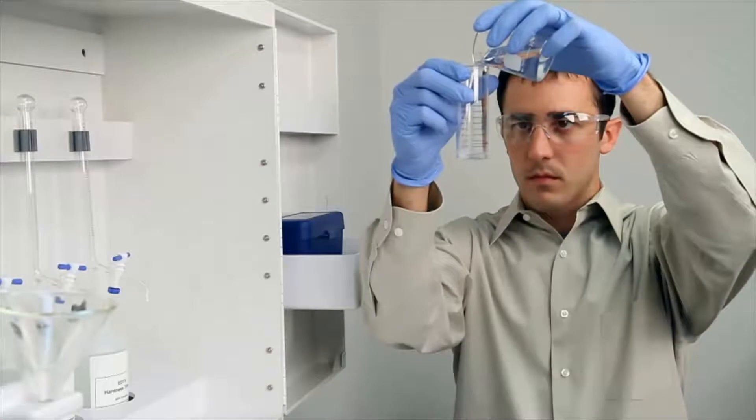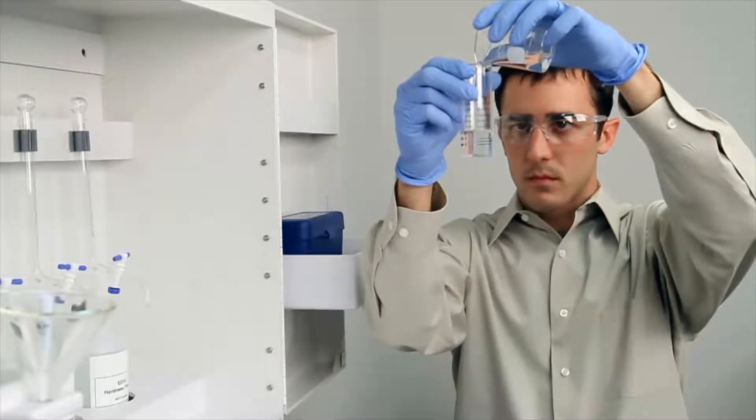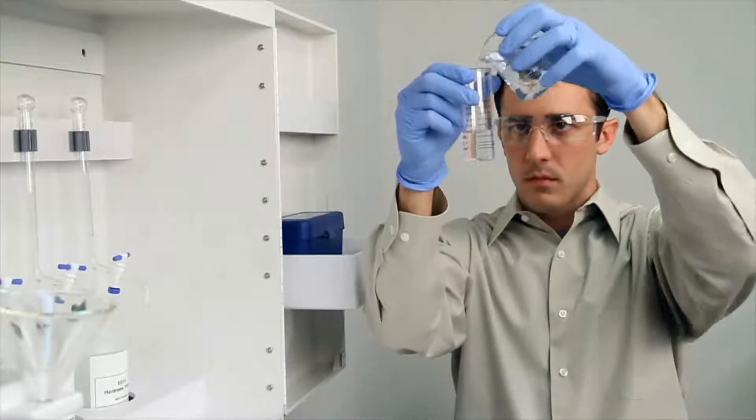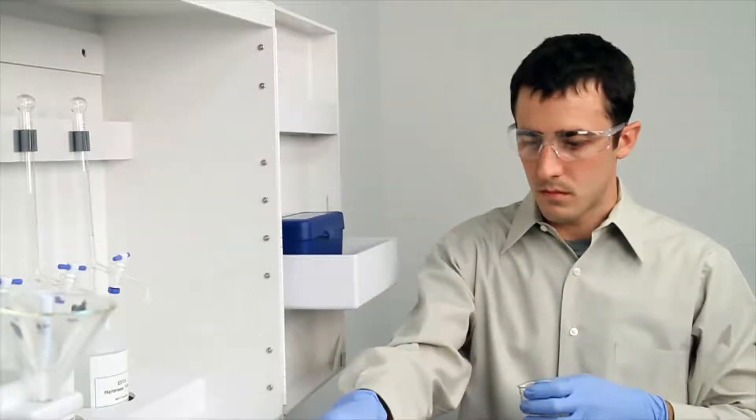To get an accurate sample size, you want to hold the vial close to eye level. Once you feel you have an accurate sample, place the vial on a level surface and bend down to eye level.